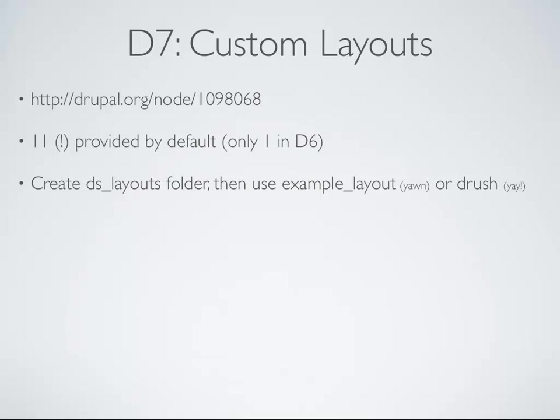So what you do is, in your theme, you create a folder — this is hard coded — called ds_layouts. And then inside that, you stick your custom layouts. There's an example one provided called example_layout that just comes with a distribution of display suite. At a minimum, it's just a .inc file, which is just a little bit of PHP. Maybe some CSS — that's optional. I think there's also an info file. But that's it. One of the nifty things is that display suite 7 comes with a drush command as well. Does anybody know what drush is? Raise your hands. Okay, good — a lot of people know what drush is.